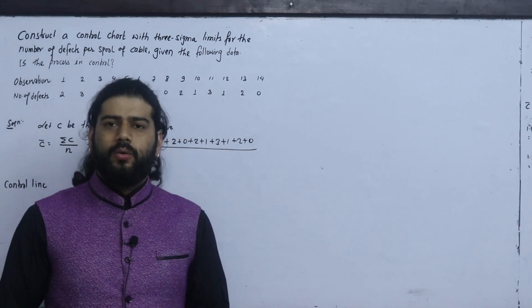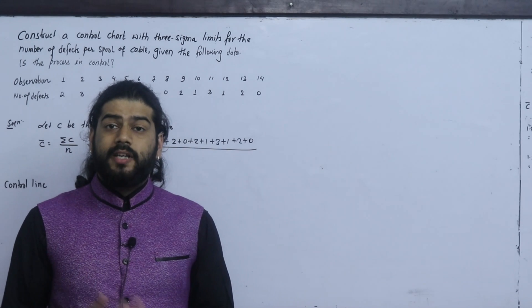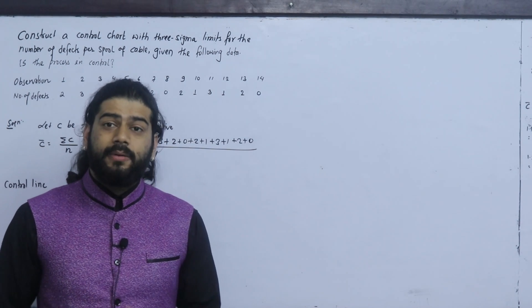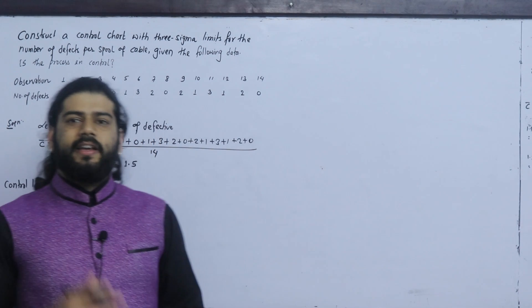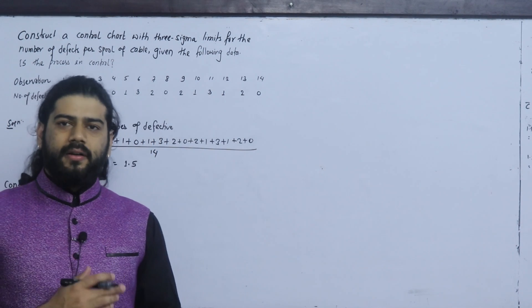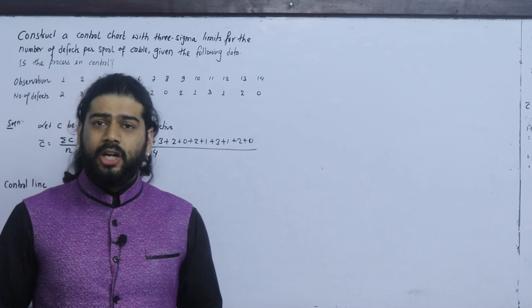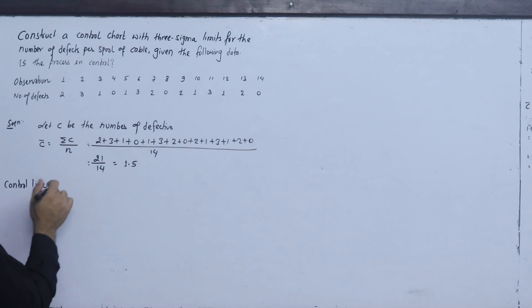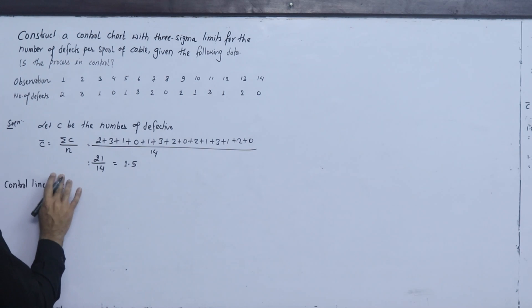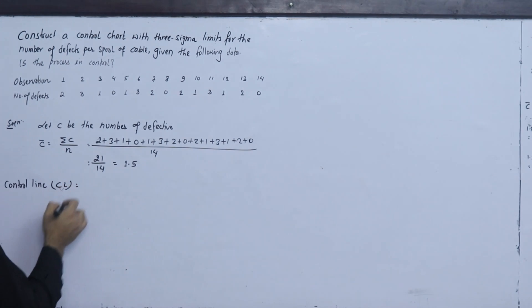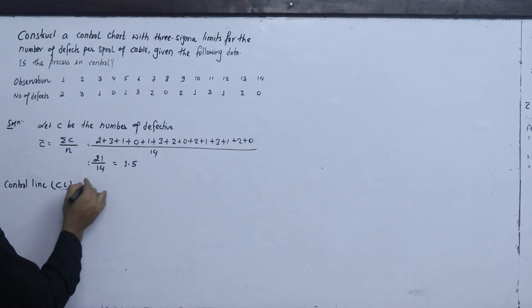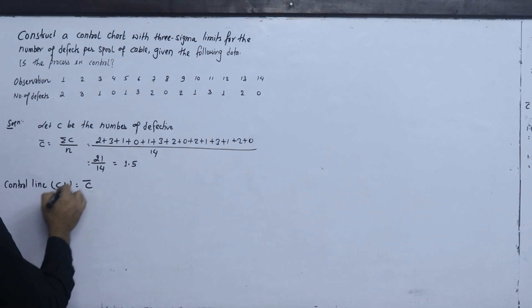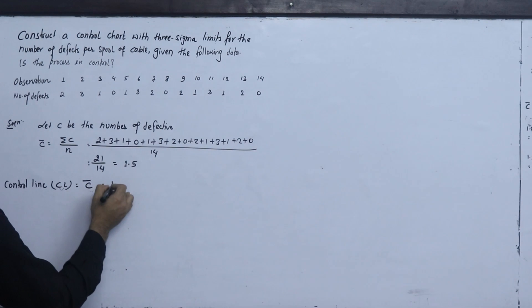Quality control is good. Control chart is good. The control line CL is equal to c-bar, which is 1.5.